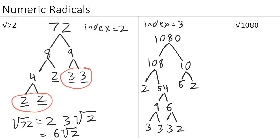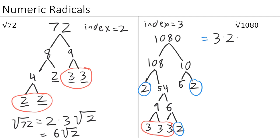Now let's see what we can group together. Since our index is 3, we want to find groups of 3 numbers. I see three 3s right here, and I also see three 2s right here. So when we write our expression out, the third root of 1,080 is going to equal 3 times 2 times the third root of 5, since the 5 that we didn't group stays inside the radical. Multiplying on the outside, 3 times 2 is 6, giving us 6 times the third root of 5 as our simplified expression.